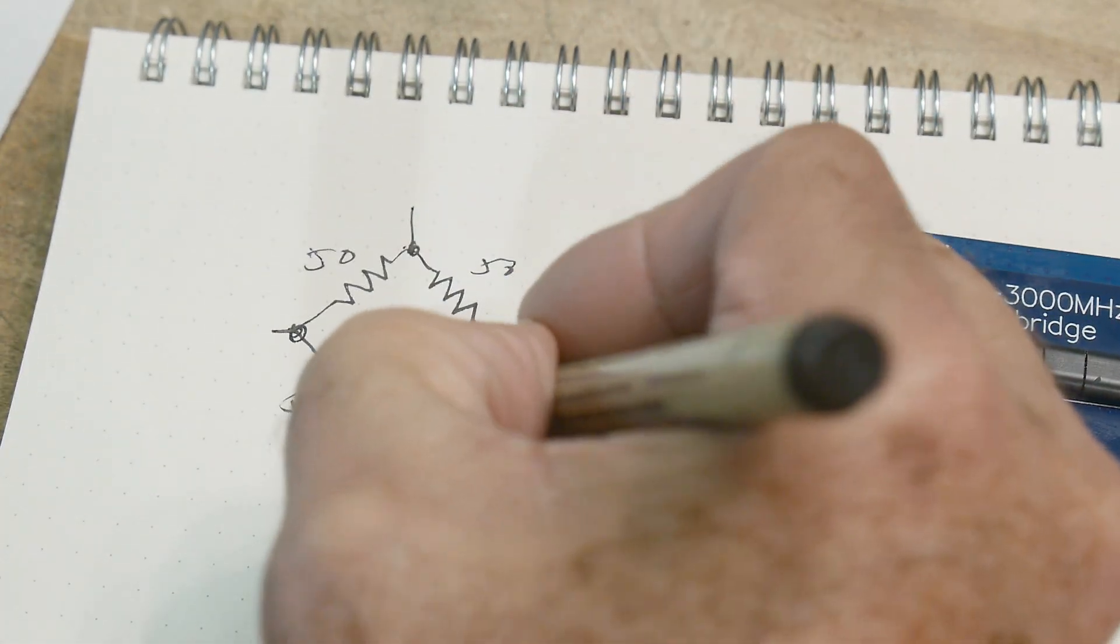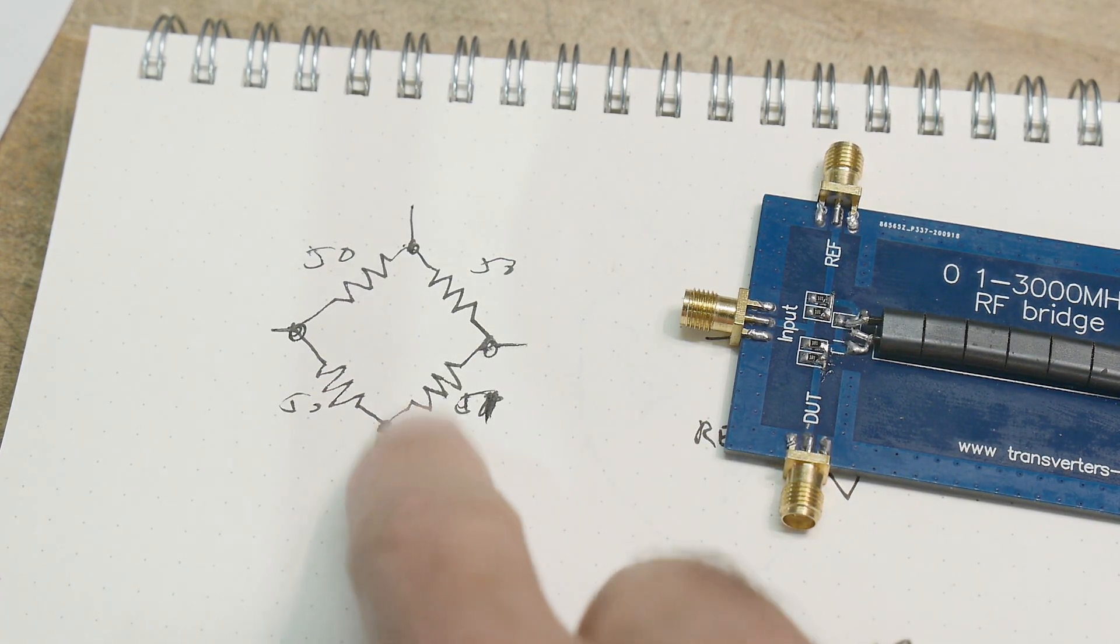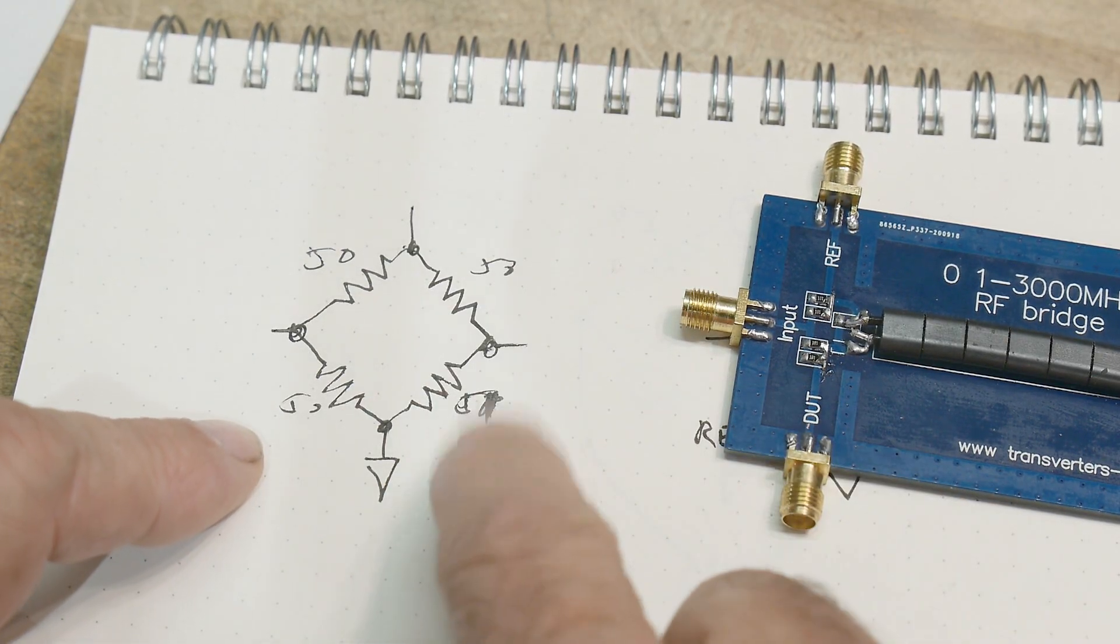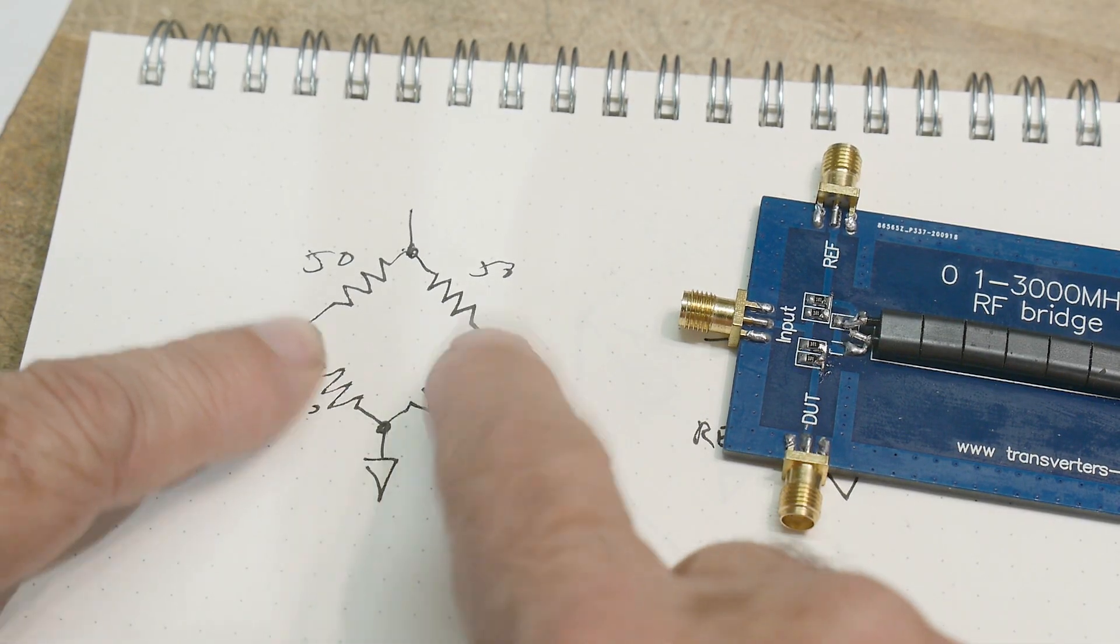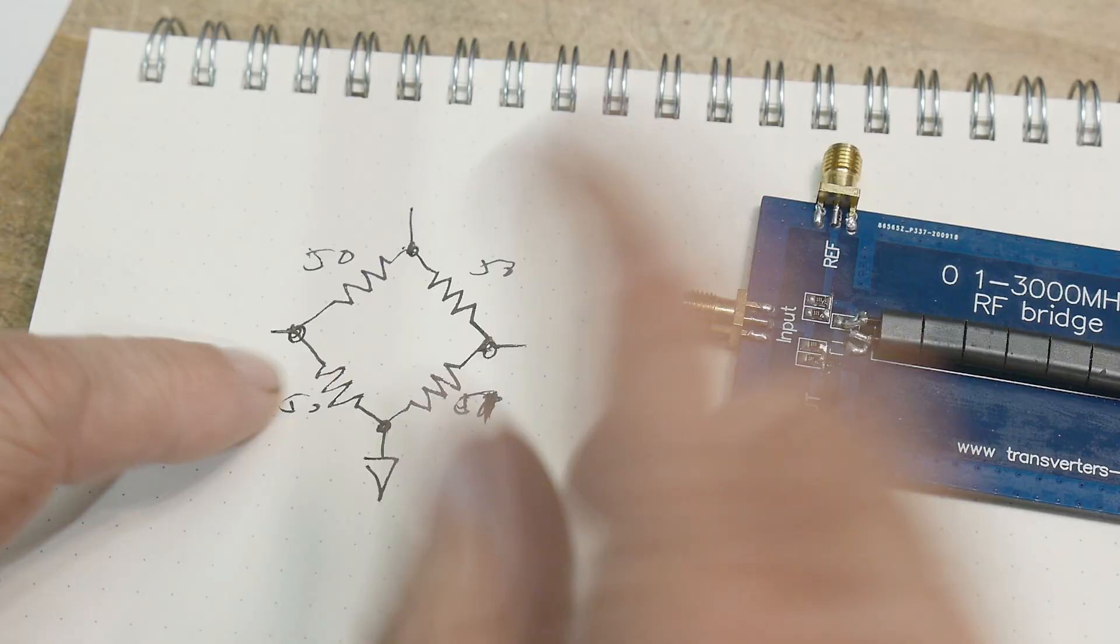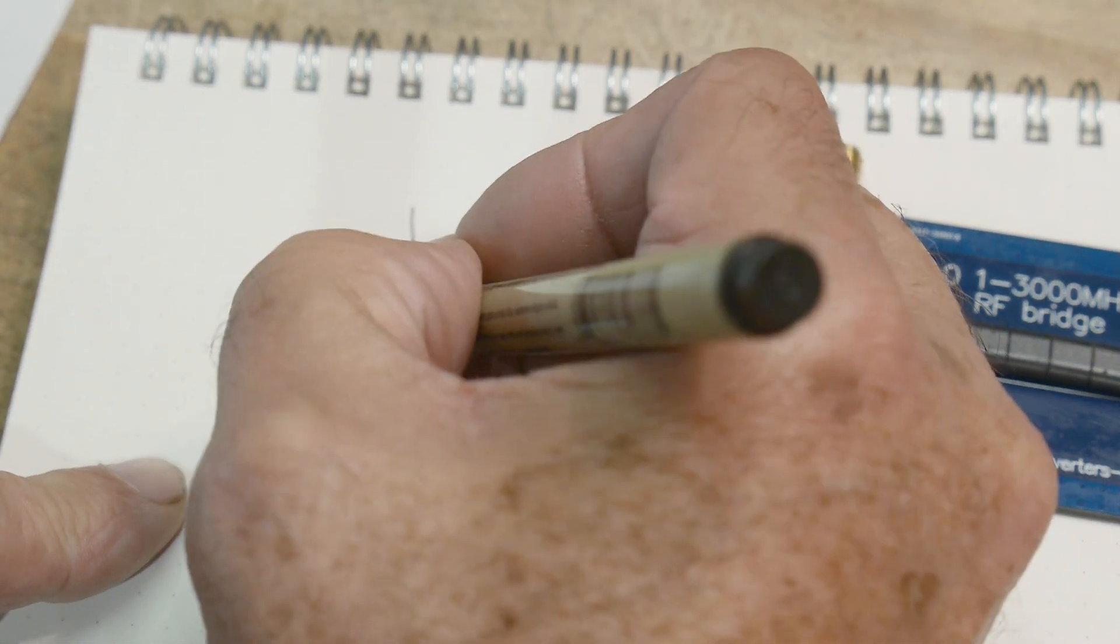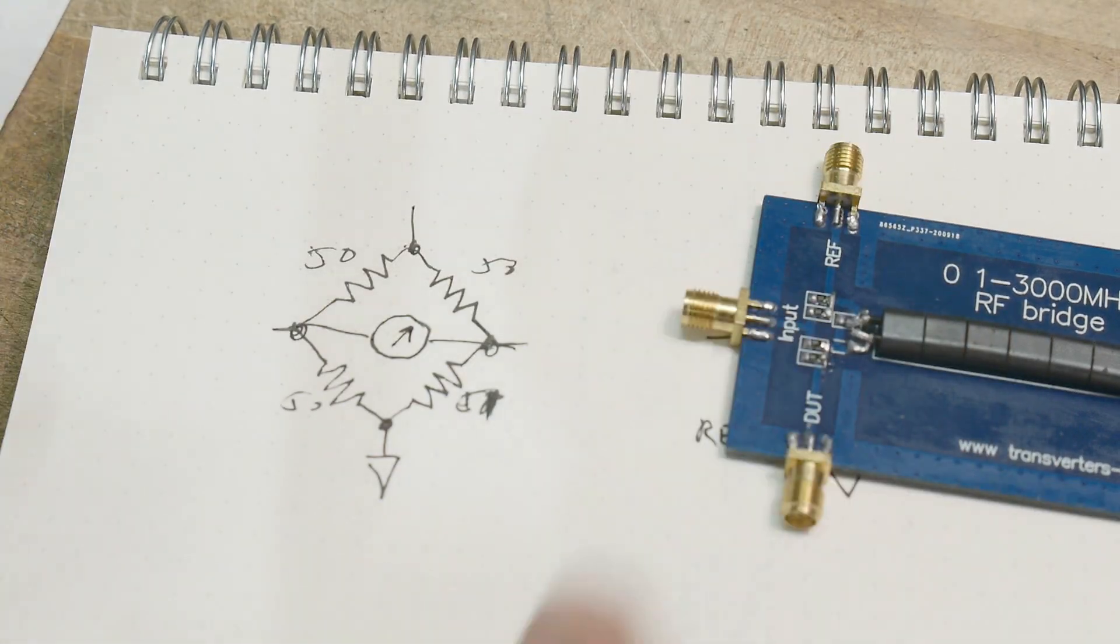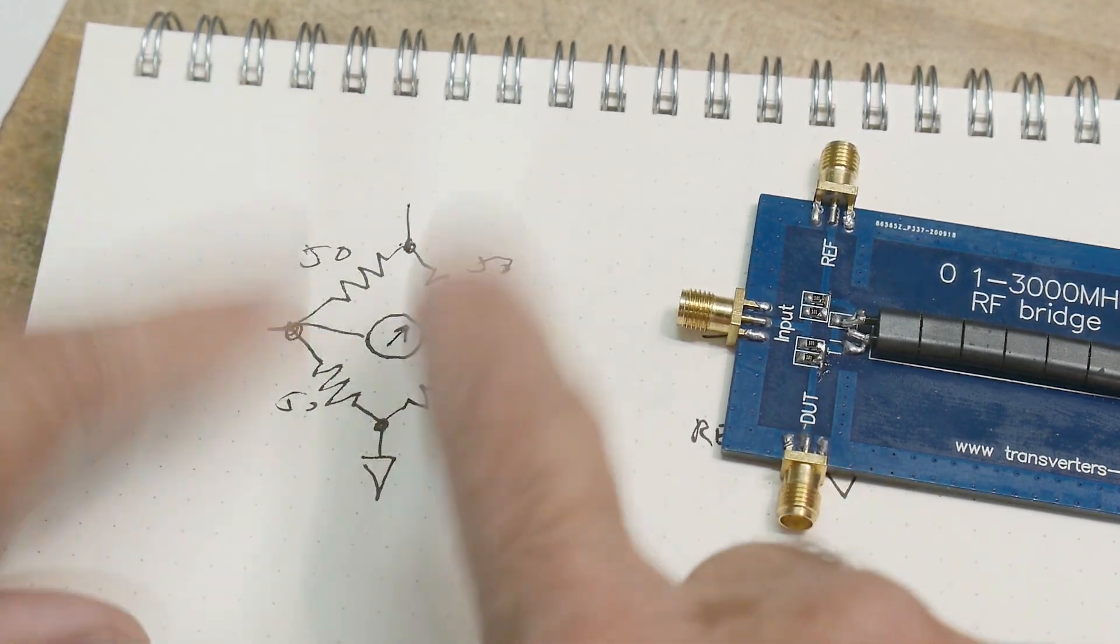But let's say this is 51 ohms. Then there'll be more current going through this side than this side because this is a little bit higher resistance. And you'll get a difference of voltage across here or a difference in current. You'll get a difference if you put like a lot of times you'll see a little meter in the middle of the bridge that's doing the measurement of the balancing of this bridge.